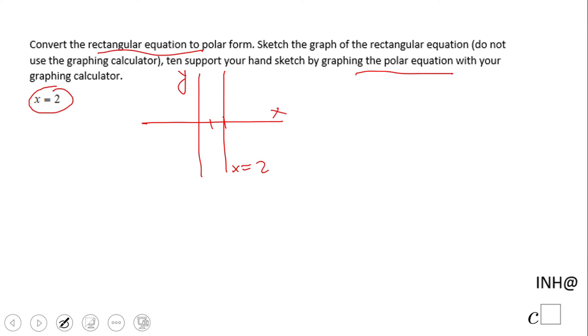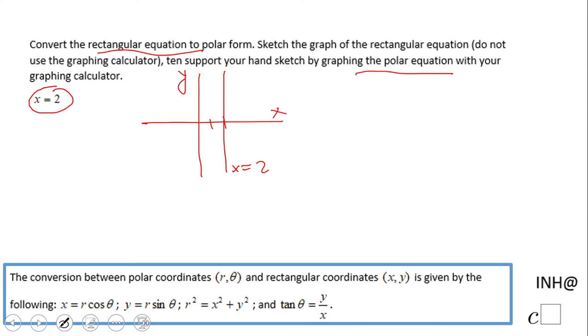Now how do I get the polar form? Look at here, it's very simple. In fact for this case, x is nothing else than r cosine of theta. So I'm going to replace x with r cosine of theta and solve for r divided by cosine of theta.